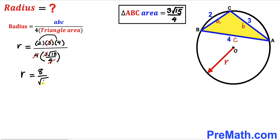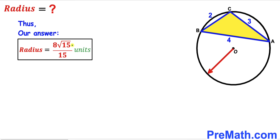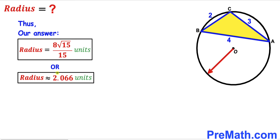Now we are going to rationalize this denominator by multiplying and dividing by the square root of 15. The square root of 15 times the square root of 15 gives us 15. So the radius r equals 8 times the square root of 15 divided by 15 units, which is approximately equal to 2.066 units. That is our final answer.